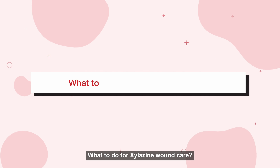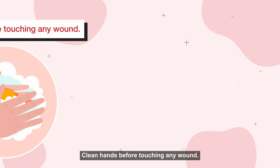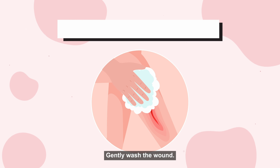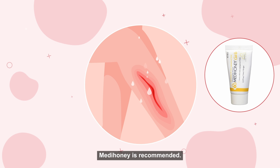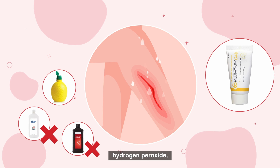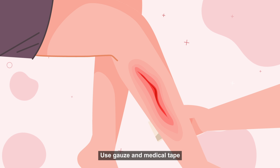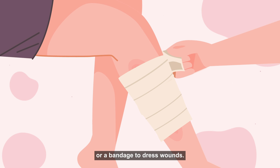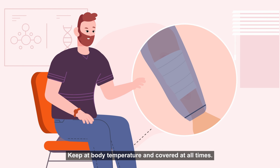What to do for Xylazine wound care: clean hands before touching any wound. Gently wash the wound. Keep the wound and skin around it moist with a wound or burn dressing — Manuka Honey is recommended. Avoid using hydrogen peroxide, alcohol, lemon juice, and vinegar on wounds. Use gauze and medical tape and/or a bandage to dress wounds. Make sure it is not too tight; keep at body temperature and covered at all times.